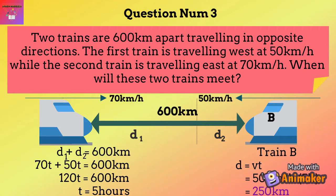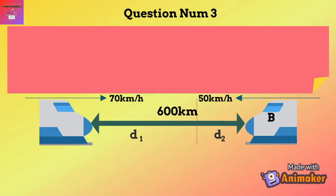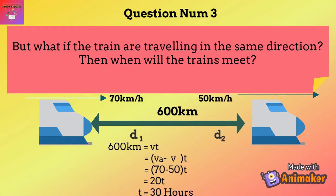To find the exact distance where they meet, plug the time into the equation: D1 equals 70 times 5 equals 350 km. That's how we handle trains moving in opposite directions. But what if they're moving in the same direction? Use D equals Vt, where V is the relative velocity. VA minus VB equals 20, so 600 equals 20T, meaning they meet after 30 hours.